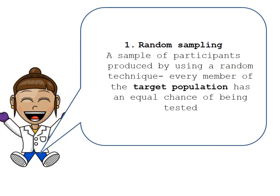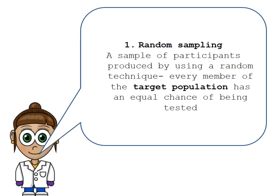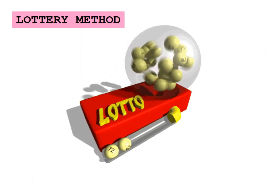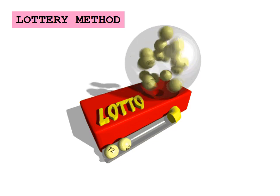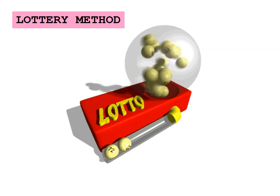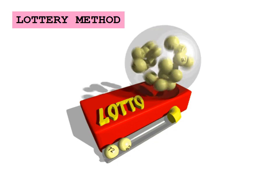There are quite a few different random techniques we can use in random sampling. The first is the traditional lottery method, where you allocate a number to each member of the target population, put all the numbers in a lottery, and the number that comes up is the participant in your sample. You could also use the traditional name in a hat method, where you put all the names in a hat and pick one out.